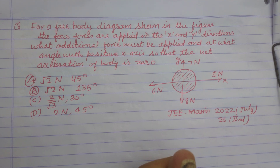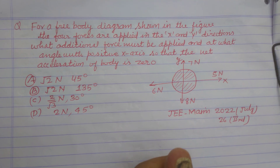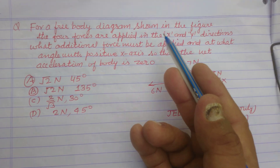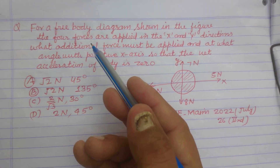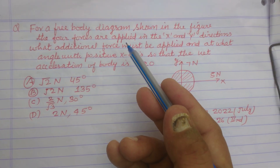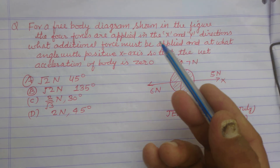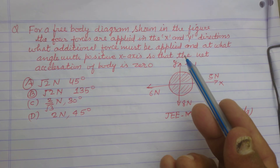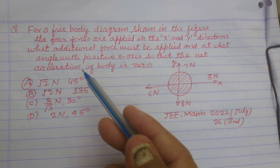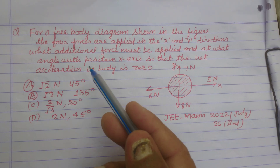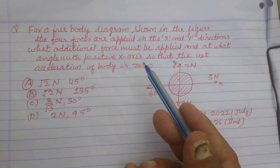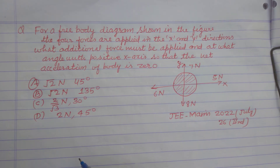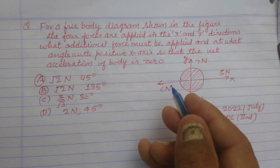Hello students. Welcome to this YouTube channel. For a free body diagram shown in the figure, the four forces are applied in the x and y directions. What additional force must be applied and at what angle with the positive x axis so that the net acceleration of the body is zero?